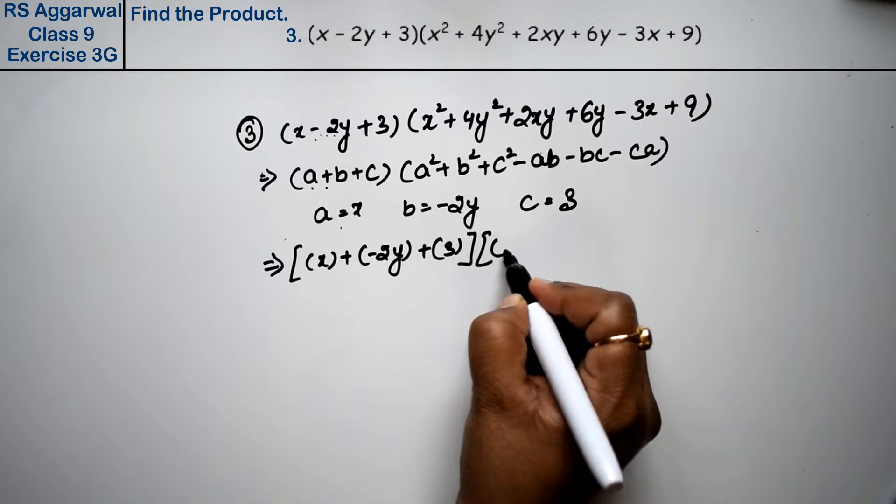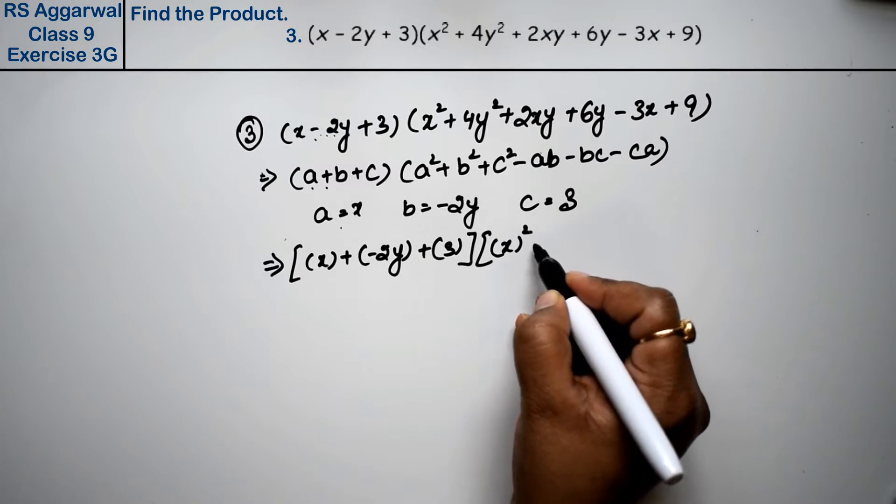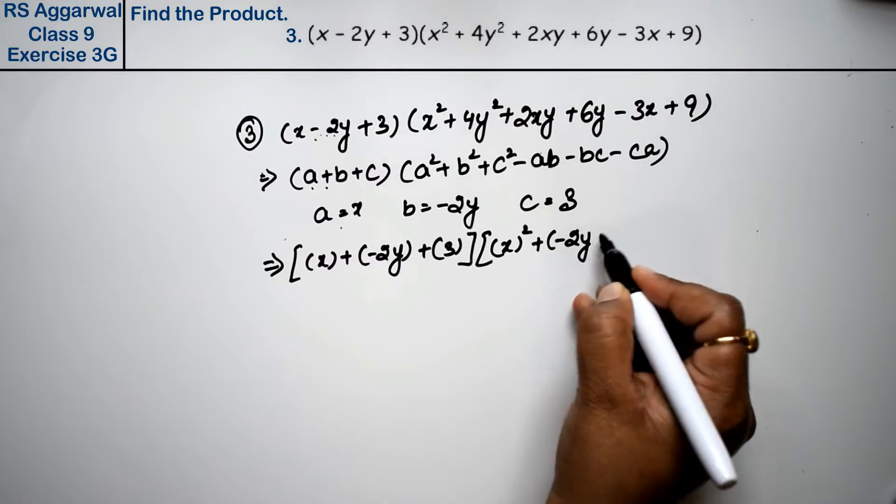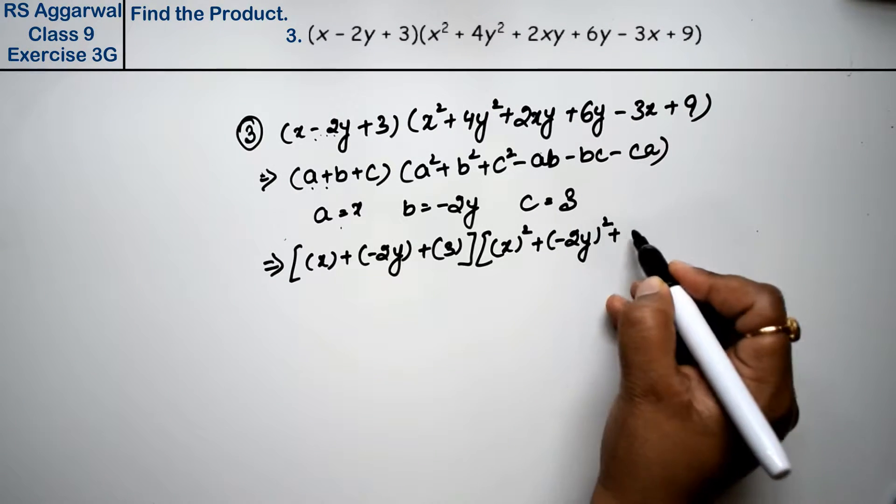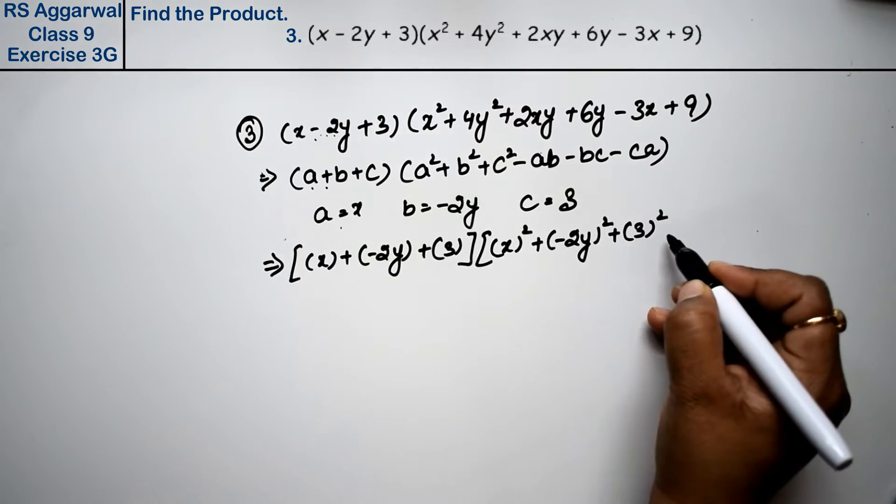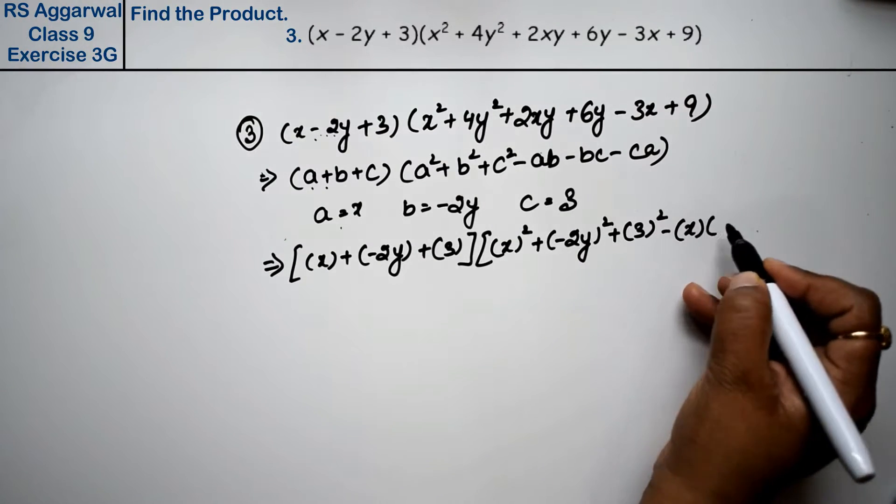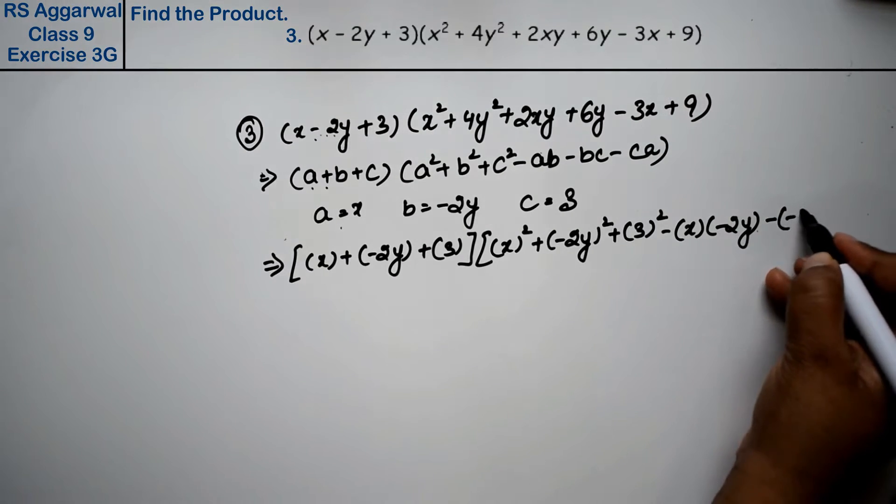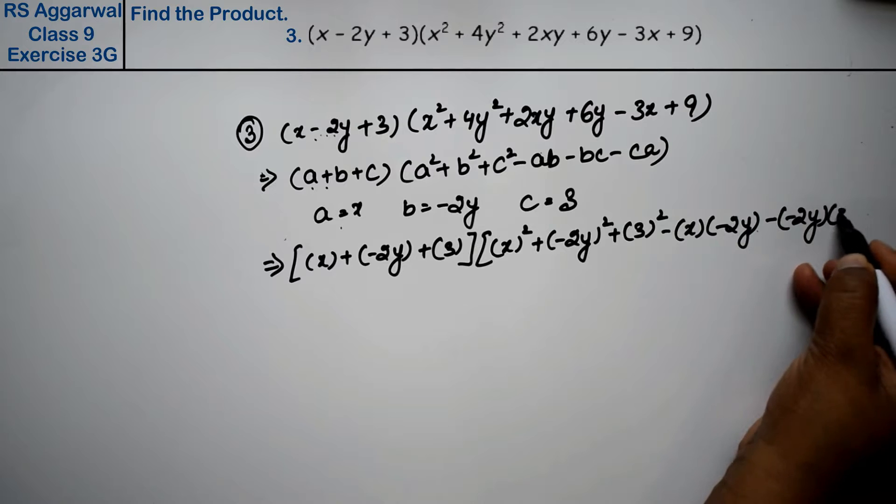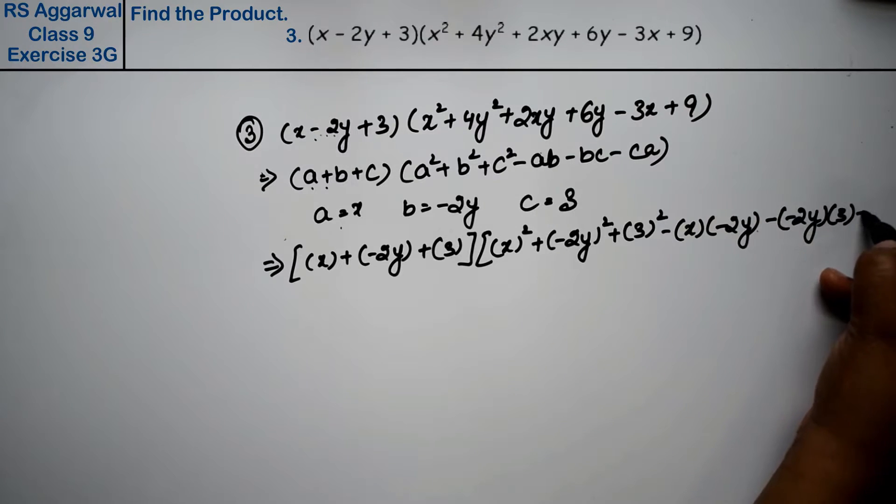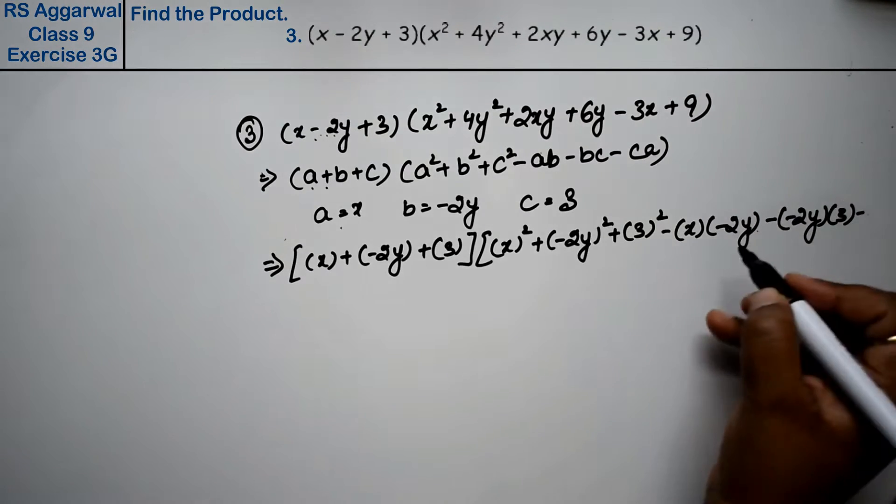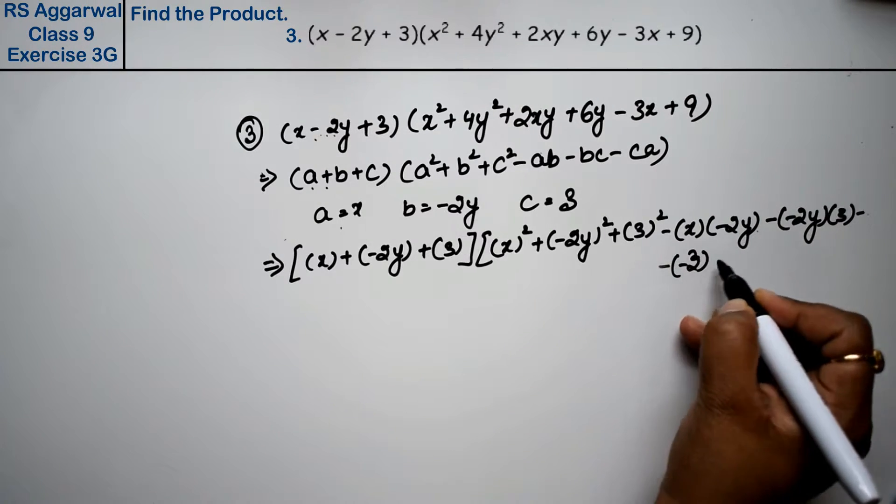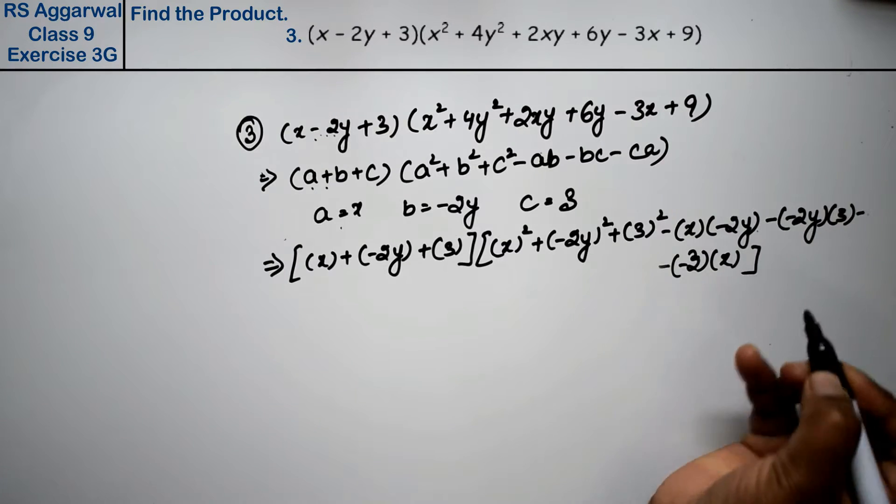Now in the second bracket: a² is x², b² is (-2y)² = 4y², c² is 3² = 9, minus x into -2y, minus -2y into 3, and minus 3 into x.